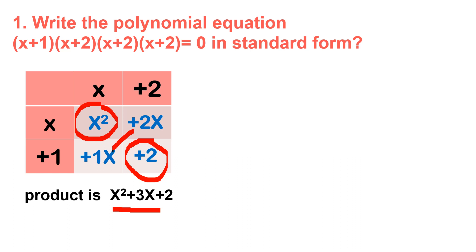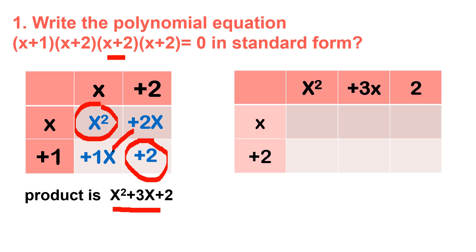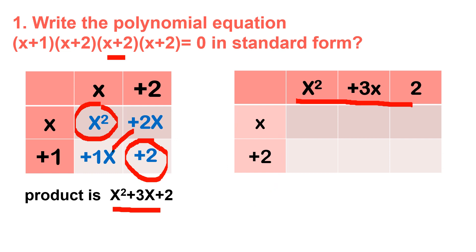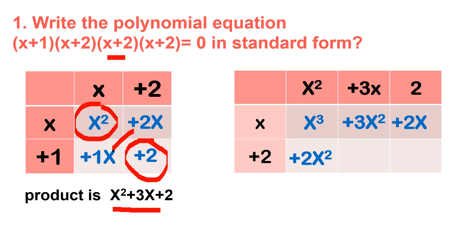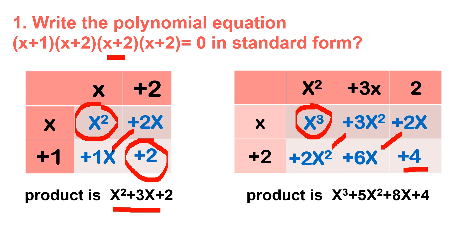Now we multiply x squared plus 3x plus 2 by the next (x+2) using another table. So: x times x squared is x cubed, x times 3x is 3x squared, x times 2 is 2x, then 2 times x squared is 2x squared, 2 times 3x is 6x, and 2 times 2 is positive 4. Solving the diagonals: 2x squared plus 3x squared gives 5x squared, and 6x plus 2x gives 8x. So the result is x cubed plus 5x squared plus 8x plus 4.